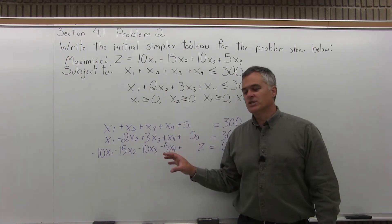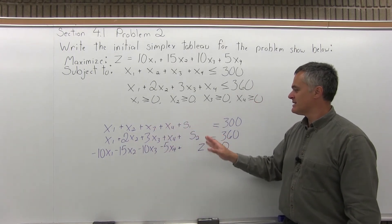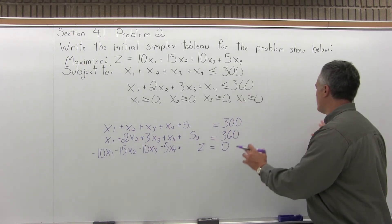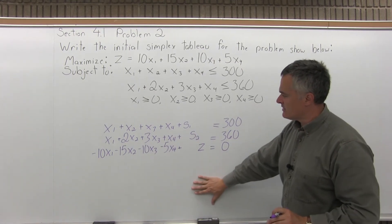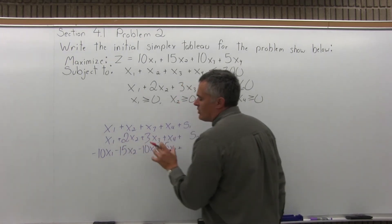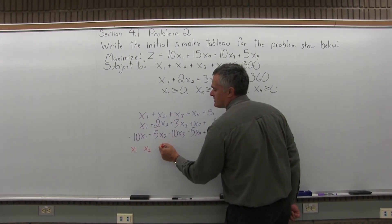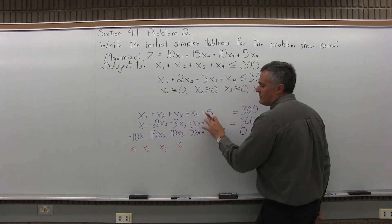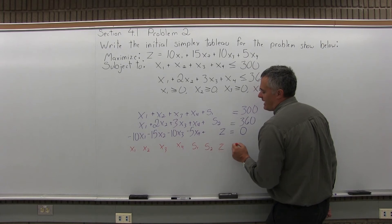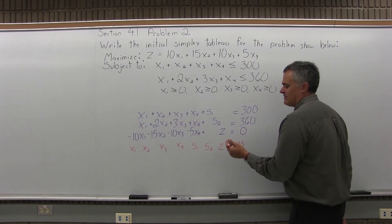Now everything is written as equations with all variables lined up: x1s first, then x2s, x3s, x4s, the slack variables s1 and s2, then z, then the equals signs, then just the numbers. Now I can turn it into a matrix. I'll label the columns: x1, x2, x3, x4, s1, s2, z, and then on the other side of the line I'll label this RHS for right-hand side.